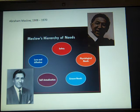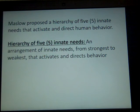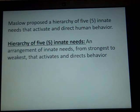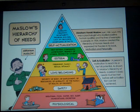With Maslow, he's famously known for his hierarchy of needs, and it's usually presented in a pyramid fashion. You have physiological needs, safety needs, esteem needs, love and affection needs, and self-actualizing needs. Maslow proposed a hierarchy of five needs that activate and direct human behavior — an arrangement of innate needs from strongest to weakest. You can't progress from one level to the next until you have those needs met at the very basic level.